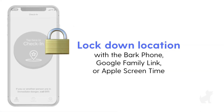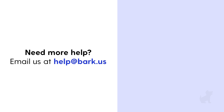And remember, you can lock location settings for added security with the BARK phone, Google Family Link, or Apple Screen Time. Just check out our support article in the video description for tips on how to set that up. Check out our other videos for tips that help you get the most out of your BARK subscription. If you have any additional questions about location features not covered in our videos, don't hesitate to reach out to us at help@bark.us.